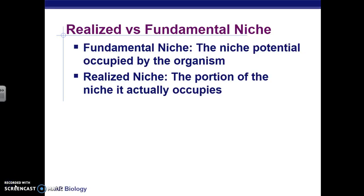There are two terms that go along with this idea of a niche. The fundamental niche is the potential niche that an organism can occupy — for example, I could potentially teach all of AP biology. But if we split it, our realized niche would be the portion we actually occupy. In the lizard example, a lizard could eat insects at all tree branch levels — that's its fundamental niche — but it actually only eats insects at, say, the high tree level. The realized niche is the one it actually occupies, based on competition in the community.